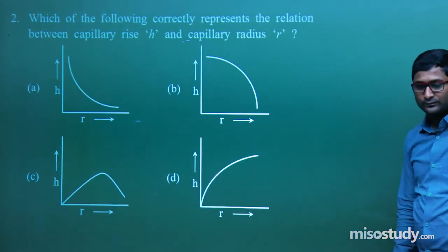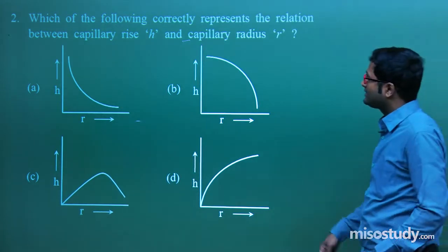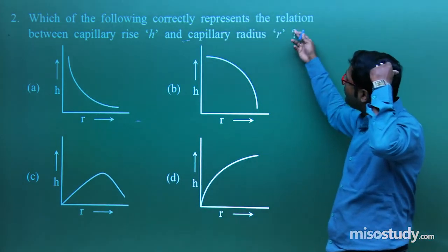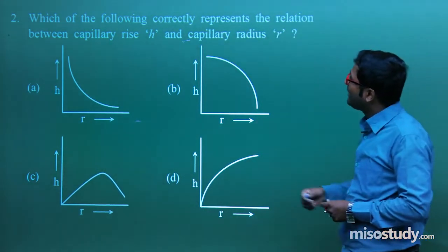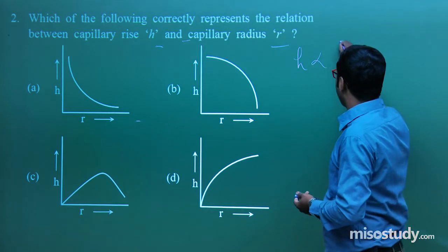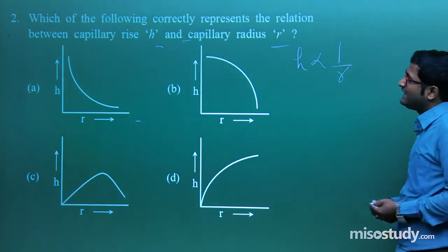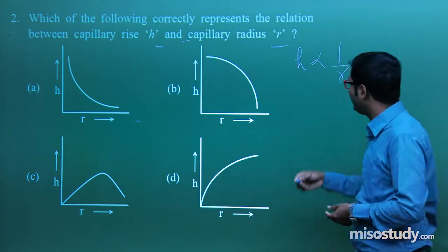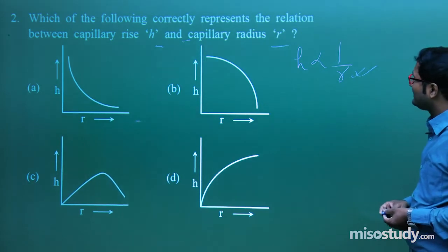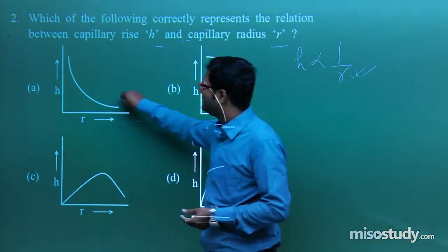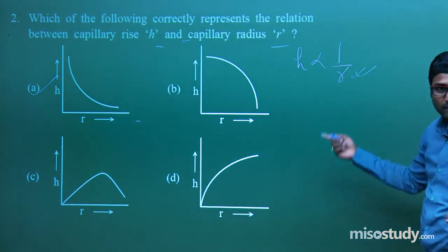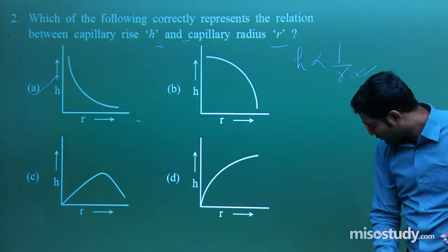Now question number 2. This is a completely conceptual question, slightly related to physics — Bernoulli's theorem. Which of the following correctly represents the relation between capillary rise and capillary radius? As we know, H and R are inversely proportional to each other. If there is a rise in H, then definitely there is a decrease in R. So the correct graph shows H inversely proportional to R.